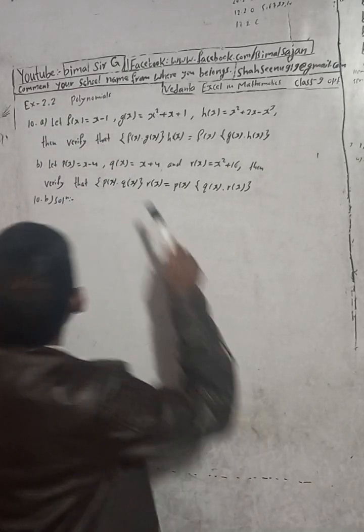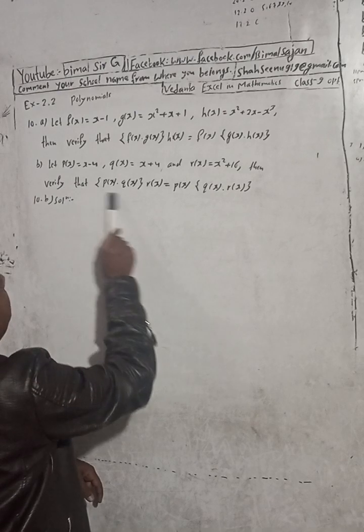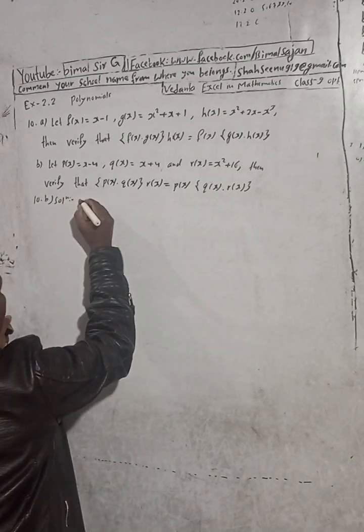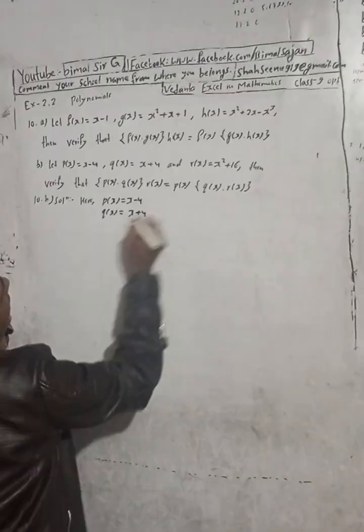The question is: let p(x) equal this much, q(x) equal this much, and r(x) is of this much. Then verify that. We have to prove, so first let me... this is given here. P(x) is equal to given here x minus 4, and q(x) is equal to given here x plus 4, and r(x)...